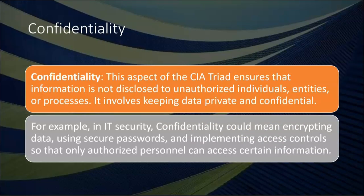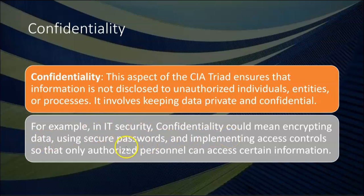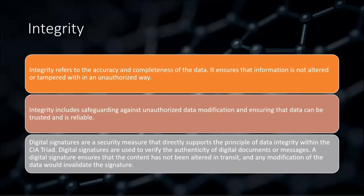Starting with the C — confidentiality ensures that information is not disclosed to unauthorized individuals, entities, or processes. Confidentiality involves keeping data private. In IT security, confidentiality could mean encrypting data, using secure passwords, and implementing access controls so that only authorized personnel can access certain information.